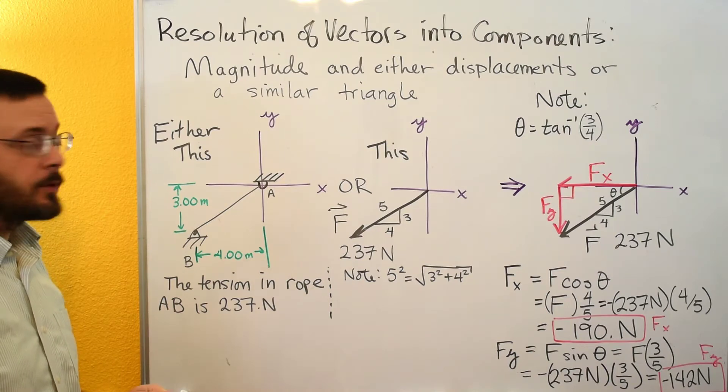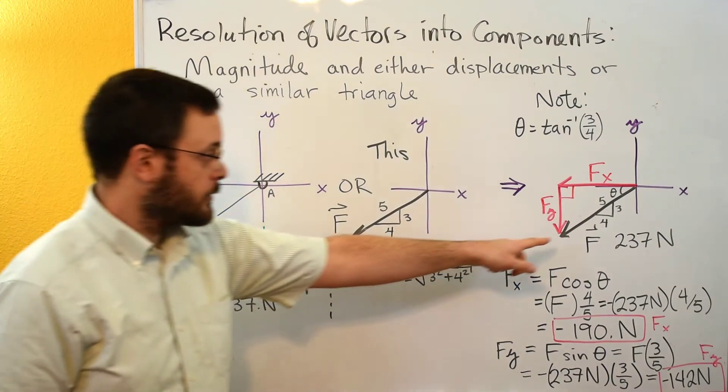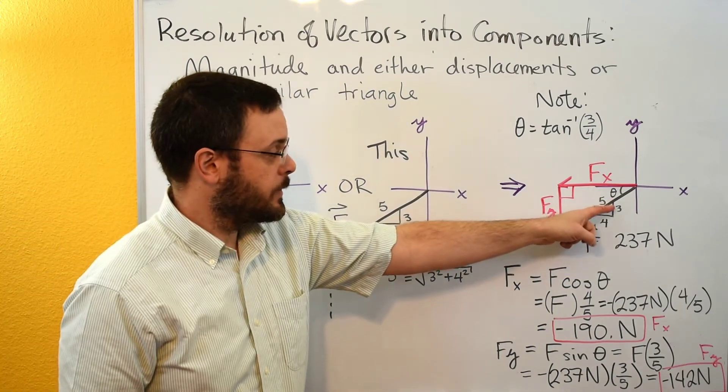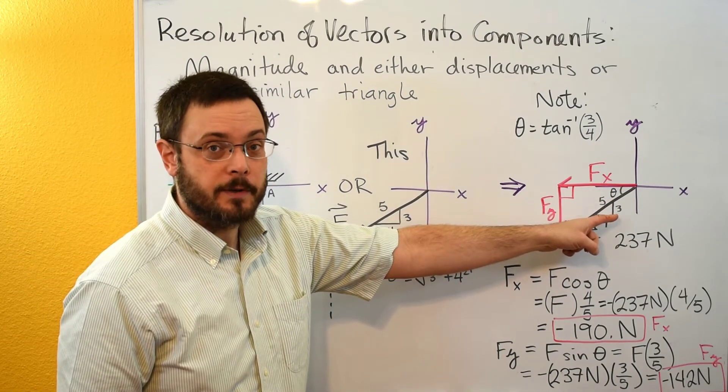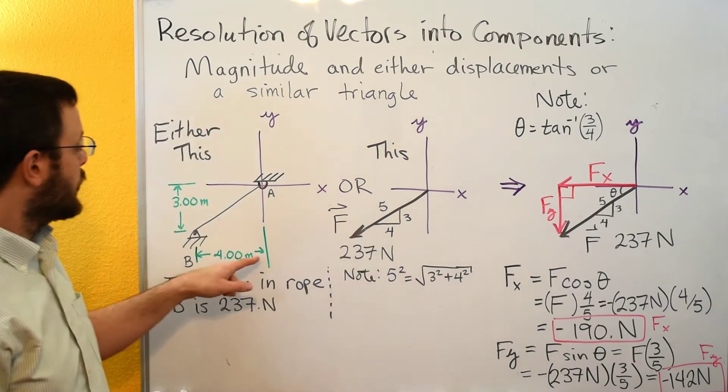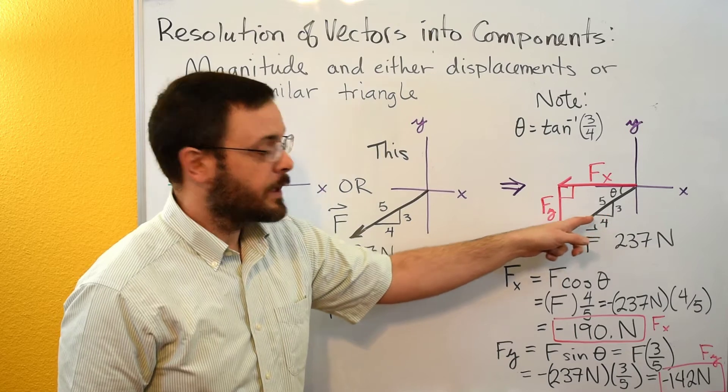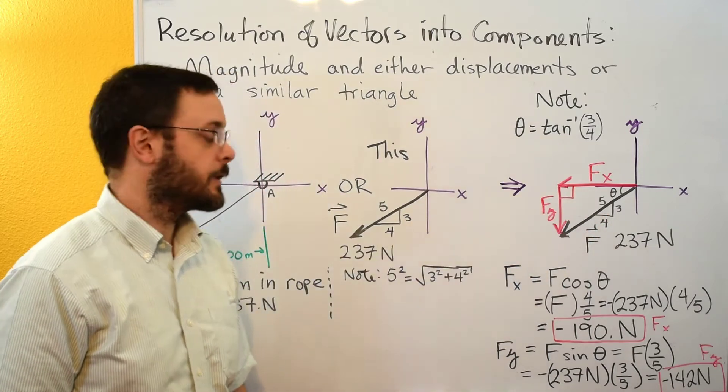So what we can do is draw a similar triangle on our force vector over here. We're going down 3 meters, and so we're going to put a 3 meter drop on our similar triangle. We're going to go over 4 meters, and so we're going to put a 4 meters horizontal on our similar triangle.